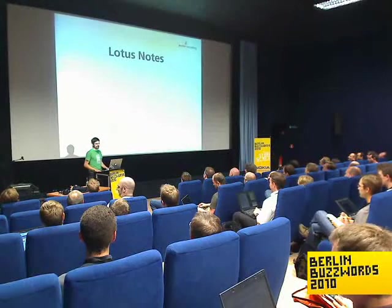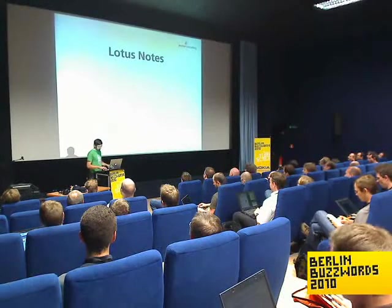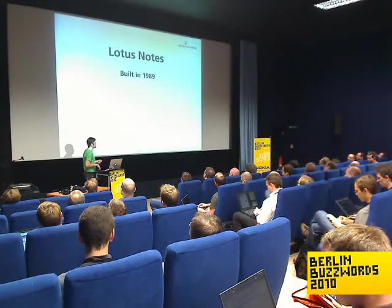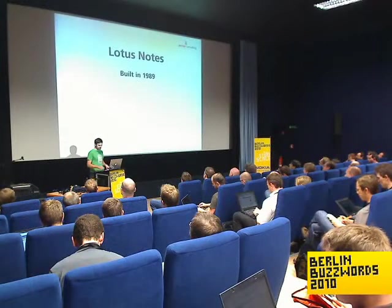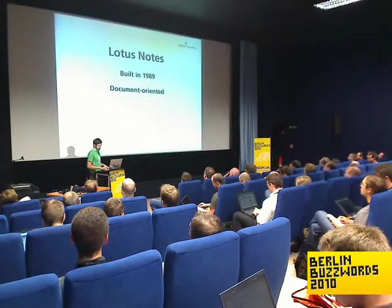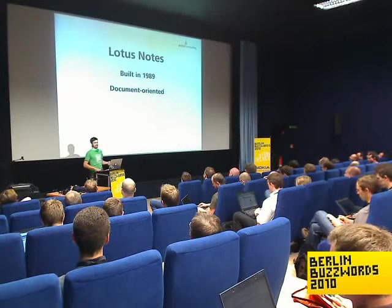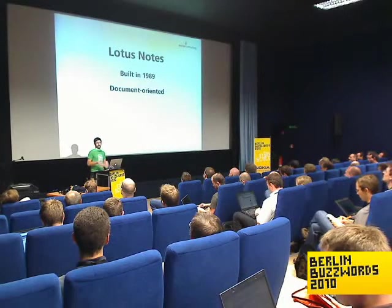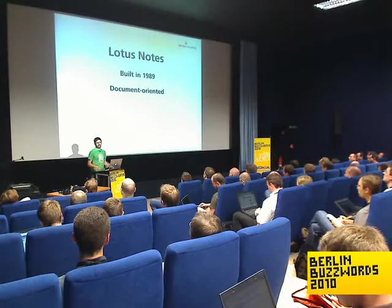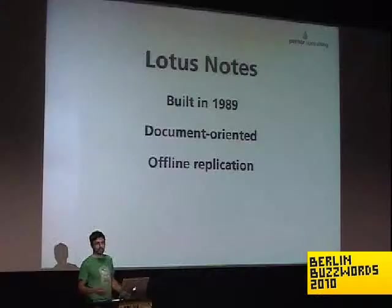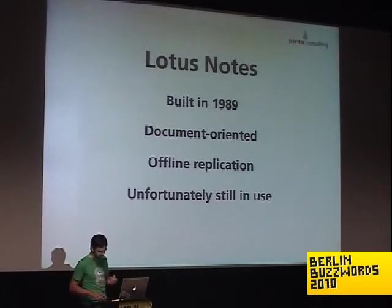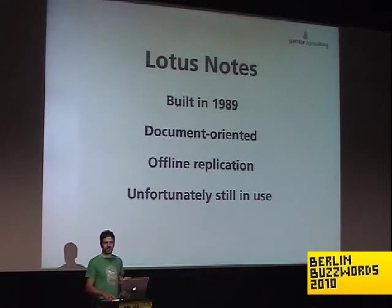Lotus Notes — the first real document database humankind ever used, built in 1989. It was document-oriented: you could stuff any data you wanted into your Lotus Notes databases, which was pretty awesome. And it had offline replication — you could take your laptop anywhere, work in Lotus Notes, and when you got back online it would sync up your data. It's unfortunately still in use. If any of you have really used Lotus Notes, you understand why — unfortunately.